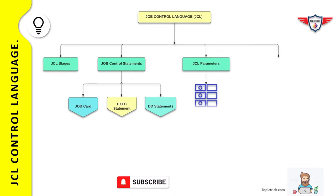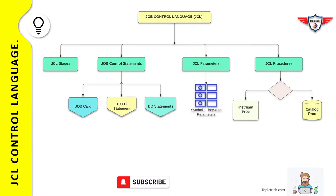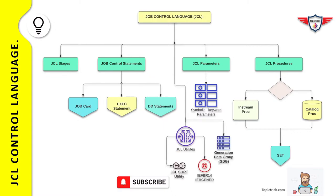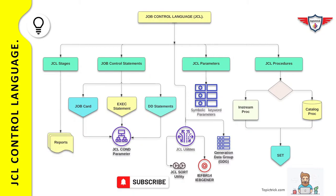We will look at JCL parameters that include both positional and keyword parameters, along with a couple of important parameters used when writing JCL. After that, we will look at JCL procedures, focusing on in-stream procedures and catalog procedures, and how to override parameters using the set statement. In the later part of this tutorial, we will focus on JCL utilities such as JCL sort, IB-Gener, and IEF-PR14. We will also cover generation data groups and where you use GDGs. The last section covers JCL tips and tricks — how to process jobs conditionally using the COND parameter or if-then-else statement, and the difference between JCL lib, step lib, and JCL order.